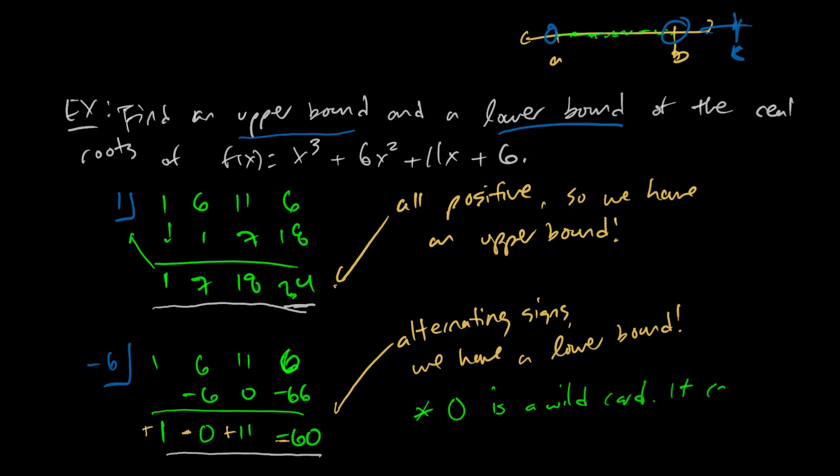When we get a 0, it's a wild card. It can be either positive or negative. Since it can be either positive or negative, I'll let it be negative. I get alternating signs. That means I know negative 6 is a lower bound. So all of my real roots are between negative 6 and positive 1. There's an interval that would satisfy what we're looking for.